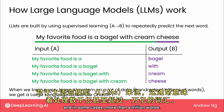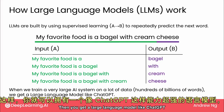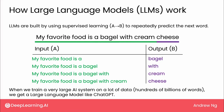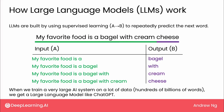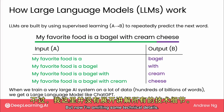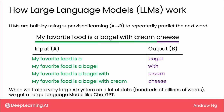and in some cases, more than a trillion words, then you get a large language model like ChatGPT, that given a prompt is very good at generating some additional words in response to that prompt. But now I'm omitting some technical details. Specifically, next week,